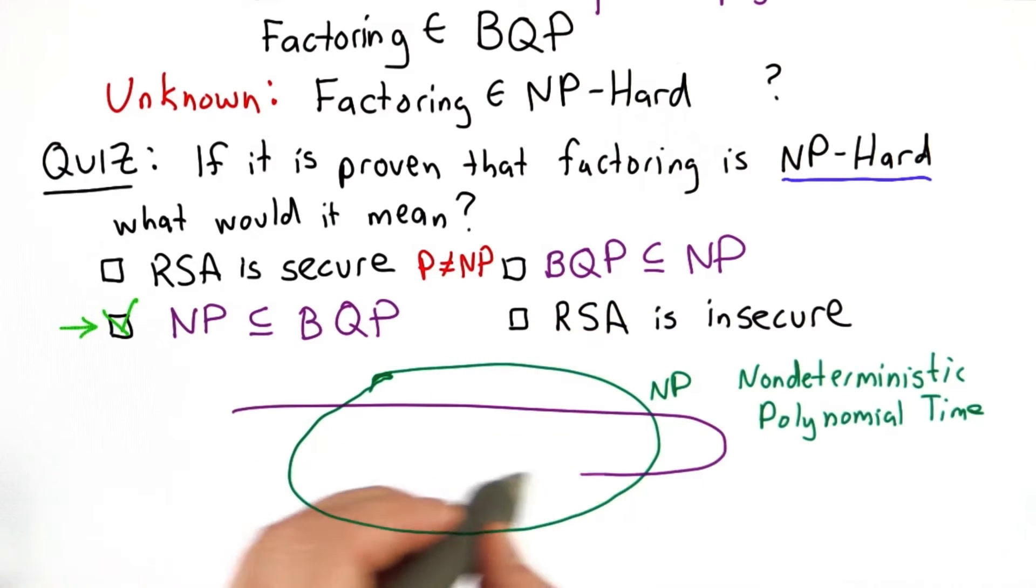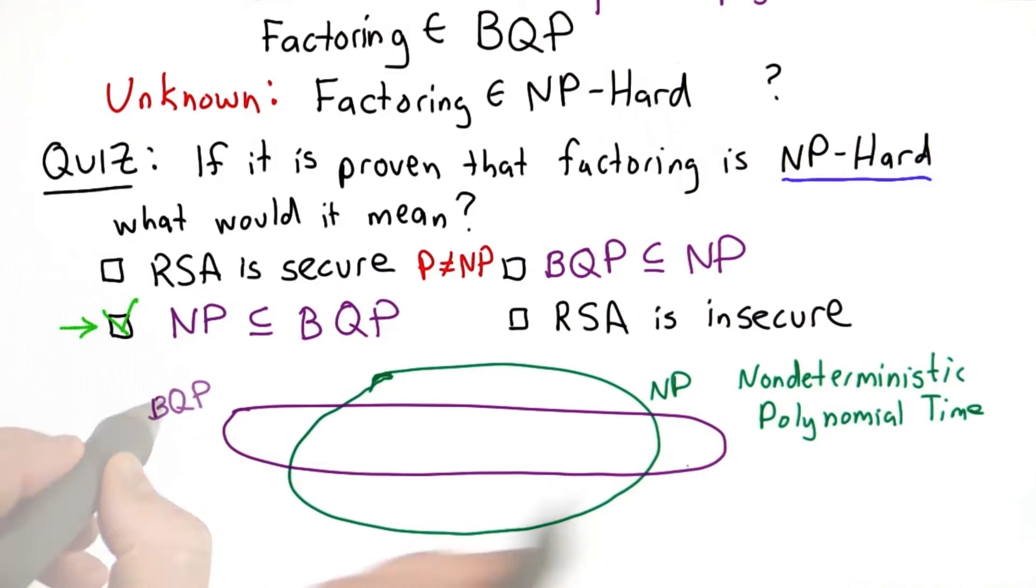And we have the class BQP, which is not known whether it's a subset of NP. And we have the problem factoring, and we know factoring is somewhere in the circle.